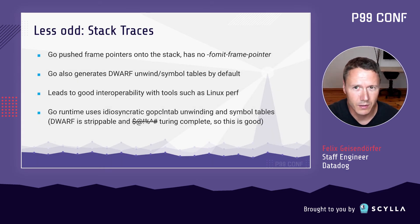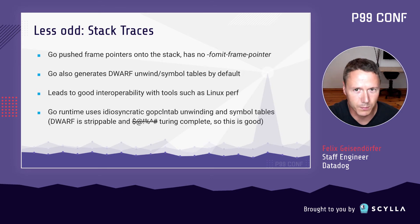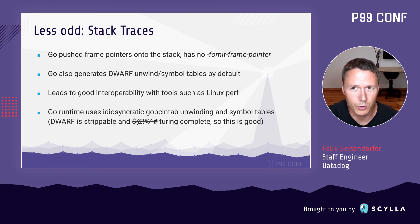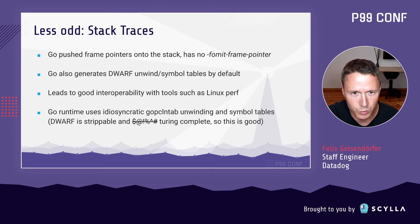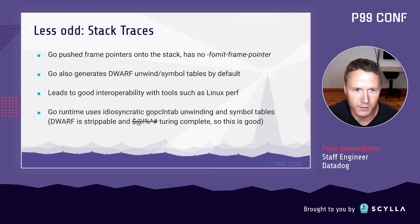Not everything about Go is odd — for example, capturing stack traces. Go pushes frame pointers onto the stack and doesn't offer the evil -fomit-frame-pointer compiler option like GCC does. Go also generates DWARF unwinding and symbol tables by default, making it compatible with Linux perf. Additionally, Go binaries include another unwinding table called go pclntab. DWARF tables can be stripped so the runtime can't rely on them, and DWARF unwinding is actually Turing-complete — creating a stack trace shouldn't require executing bytecode in a Turing-complete VM.